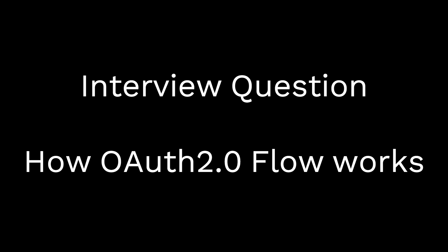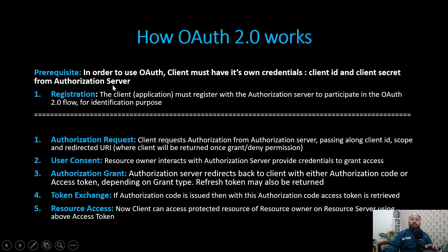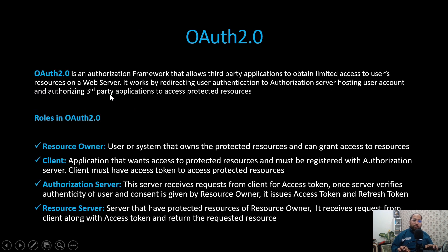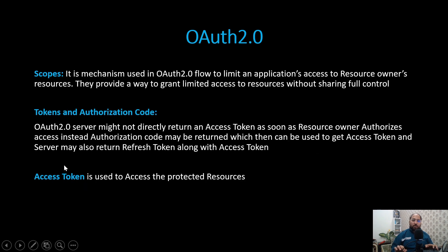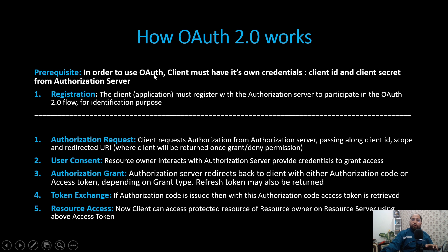Now let us try to understand how OAuth 2.0 works. The client must register against the authorization server. In order to use OAuth, the client must have its own credentials — that is, client ID and client secret — which it can receive by registering against the OAuth server. The application registers with the OAuth server, and as a result, the authorization server issues a client ID and client secret.